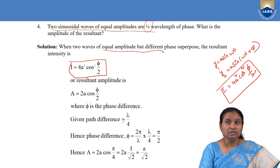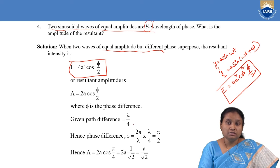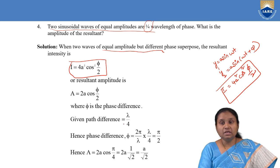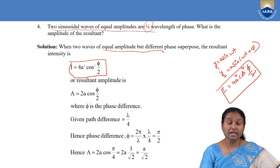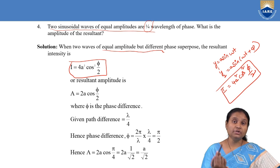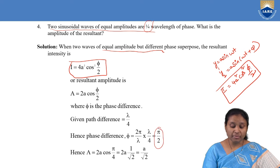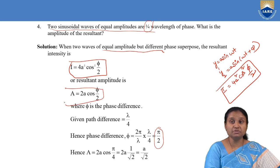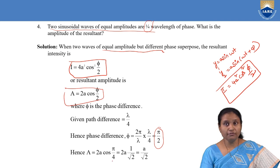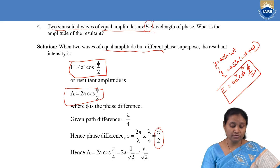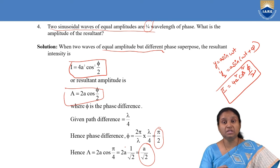Substituting the phase difference φ = π/2 into the expression for resultant amplitude, which is 2A cos(φ/2), we get 2A cos(π/4). Since cos(π/4) = 1/√2, if we simplify, our resultant amplitude comes out to be A/√2.